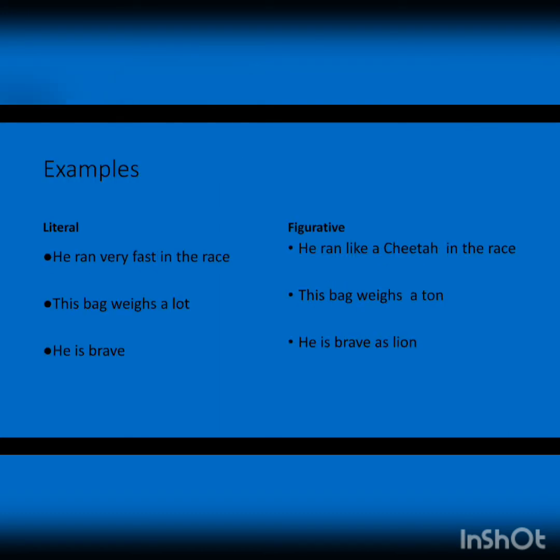Let's understand the concept with the help of examples. تو اب ہم دیکھتے ہیں examples — جو literal meaning ہے اس کی example ہے: 'He ran very fast in the race.' یہ literal meaning کی example ہے۔ اب اسی کو figurative meaning میں دیکھتے ہیں: 'He ran like a cheetah in the race.' یہ پڑھنے کے بعد your mind starts to have an imaginary picture of a cheetah، اس طرح سے figurative language آپ کے mind میں ایک picture draw کرتی ہے۔